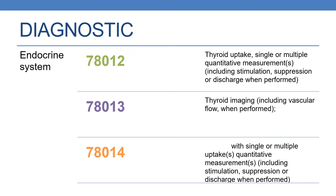Now coming to the CPT codes of diagnostic nuclear medicine, endocrine system. The first code is 78012. The description is thyroid uptake, single or multiple, quantitative measurements, including stimulation, suppression or discharge when performed.